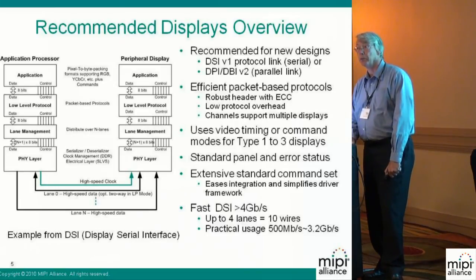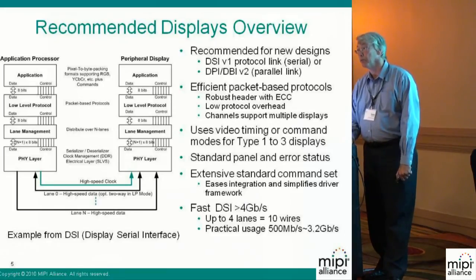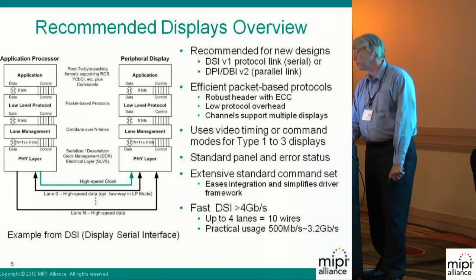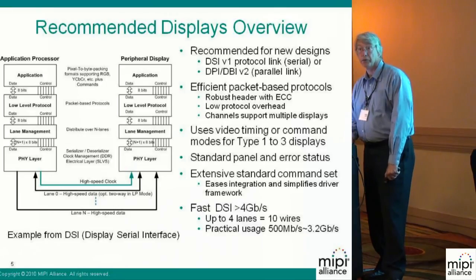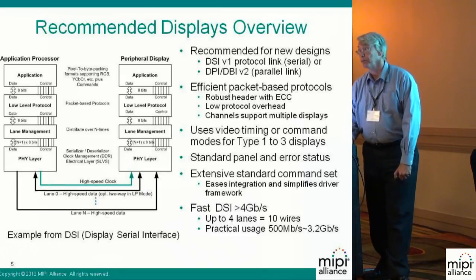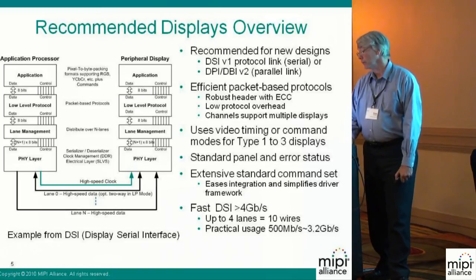All that on top of a PHY running in the vicinity of 500 to maybe even 800 megabit per lane, giving you well over 3 gigabit today. That is plenty to support high definition video — HD 1080p. So you can see why we look forward to even faster displays. If you can do HD now, you may want to do 3D HD later on, and our vision is pretty clear on that.